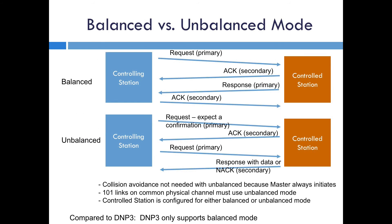That leads us to a discussion of balanced versus unbalanced mode. In balanced mode, which is equivalent to DNP, there's a request from the primary and an acknowledgement from the secondary, and this could happen in either direction. With unbalanced, the controlling station or the master always has to initiate the command sequence. This is because it's sharing, for example in a multi-drop line, the physical layer with lots of controlled stations. DNP has no equivalent of unbalanced mode.